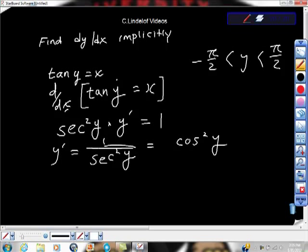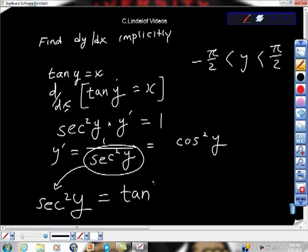If we just take secant squared y out, by the Pythagorean identity, we know that secant squared y equals tan squared y plus 1.